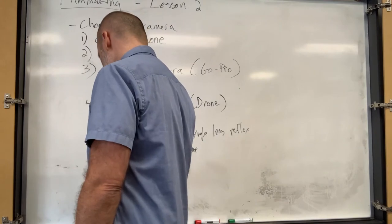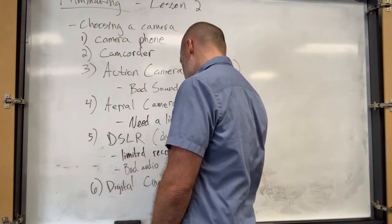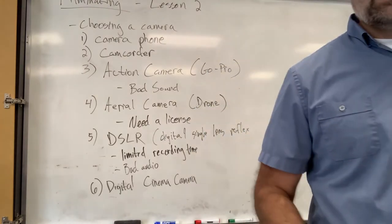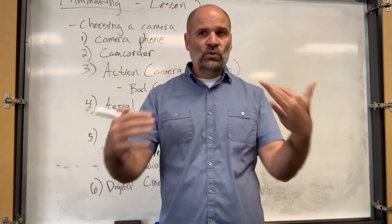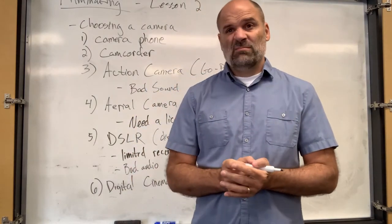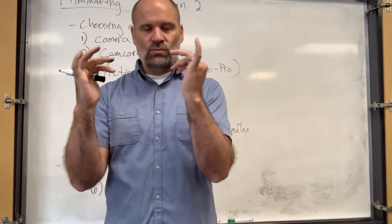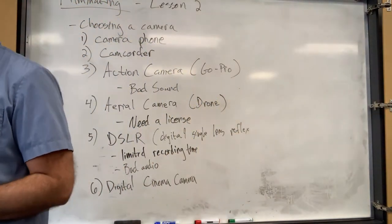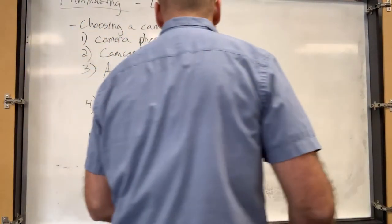No matter what camera you use, you should always consider a separate audio system. And then the last one — the one we like — is basically a digital cinema camera. Most Hollywood films are filmed on what are called RED cameras, which give you that cinematic look. A lot of it is about cinematic lenses too. Some people don't like it because it does take away from a raw digital appearance where it feels like you're watching it live, but it's not very cinematic.